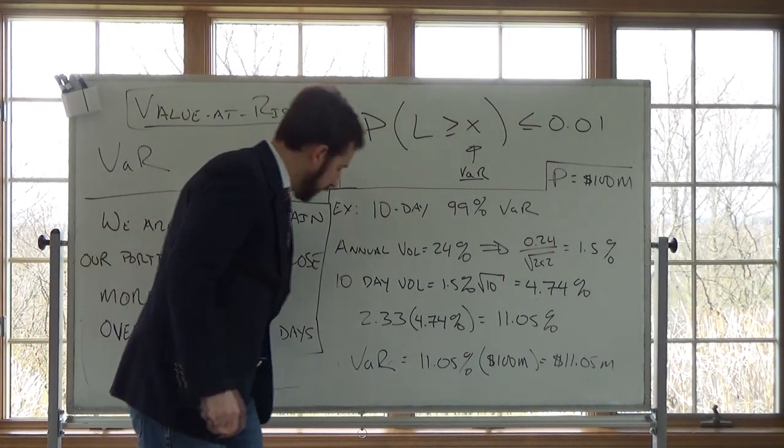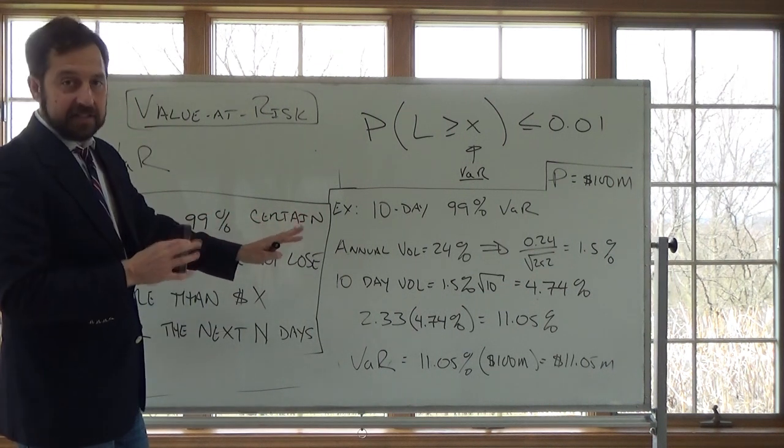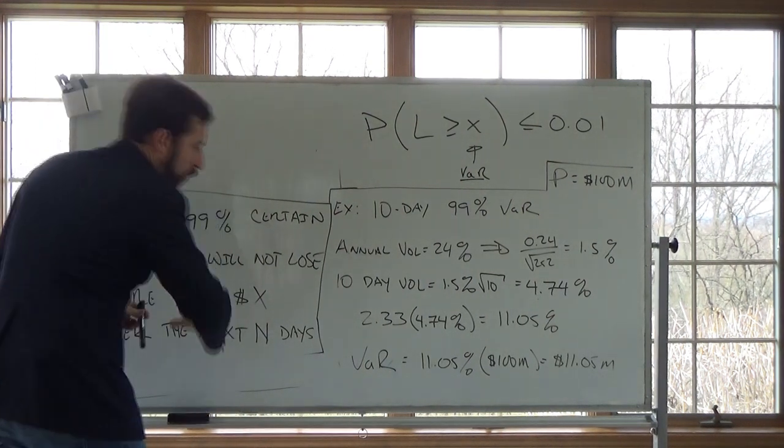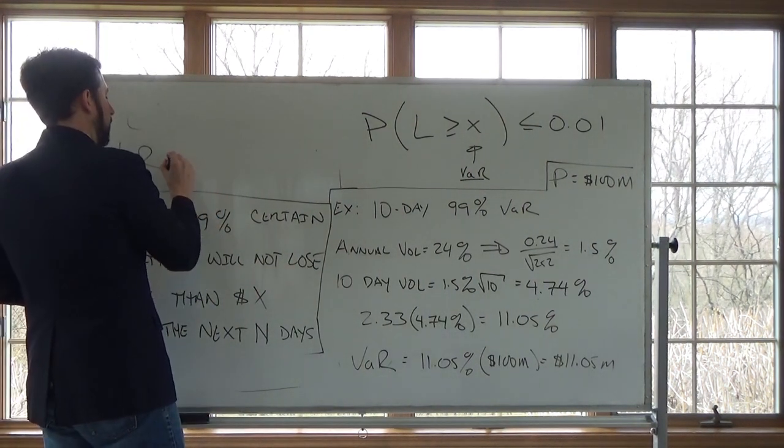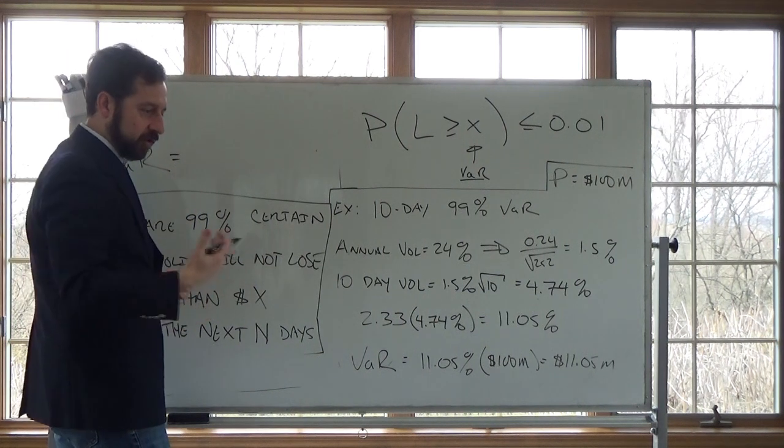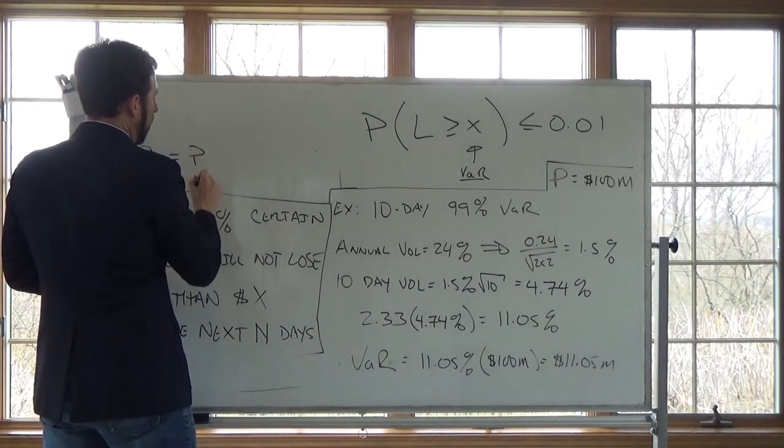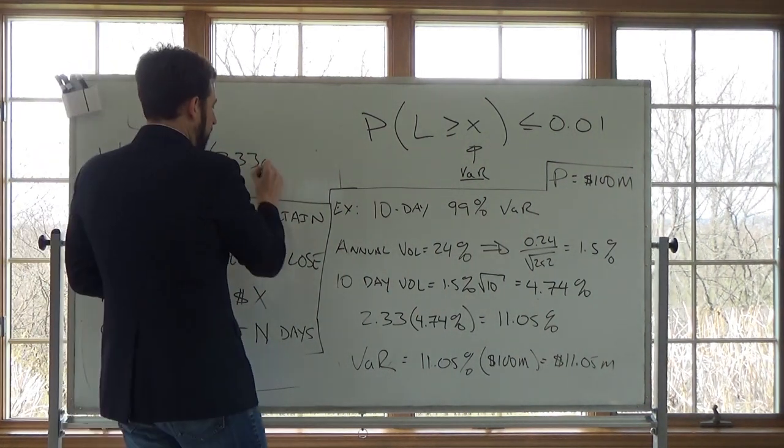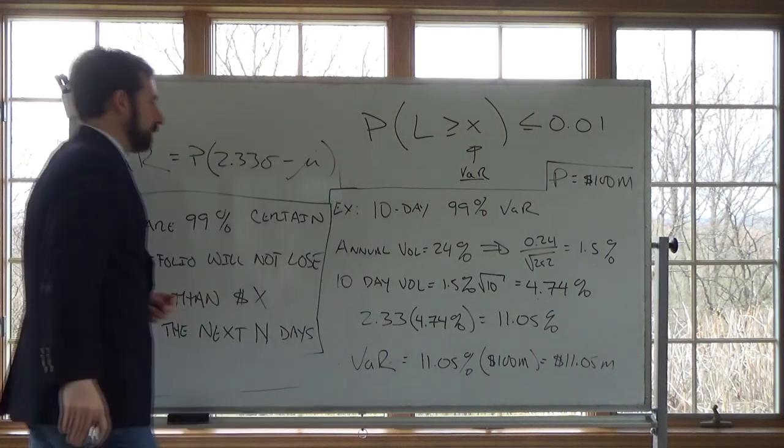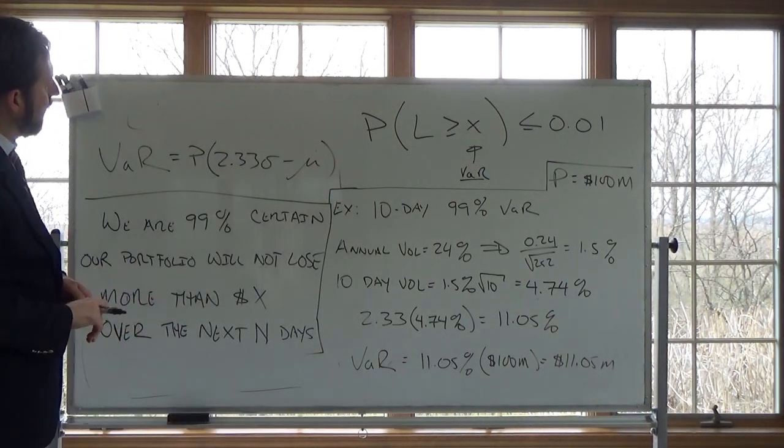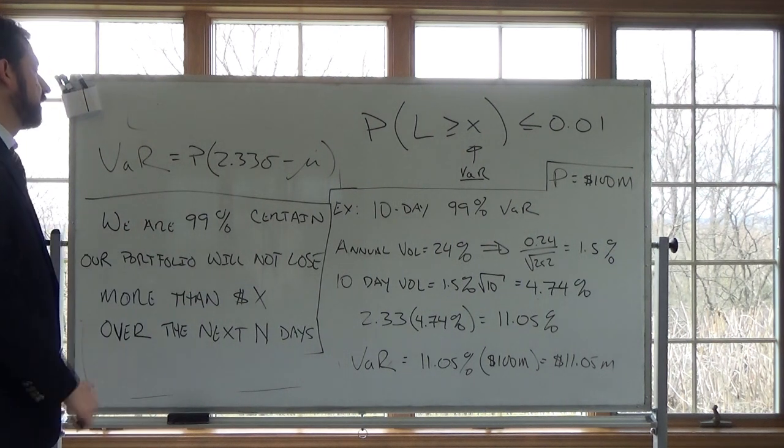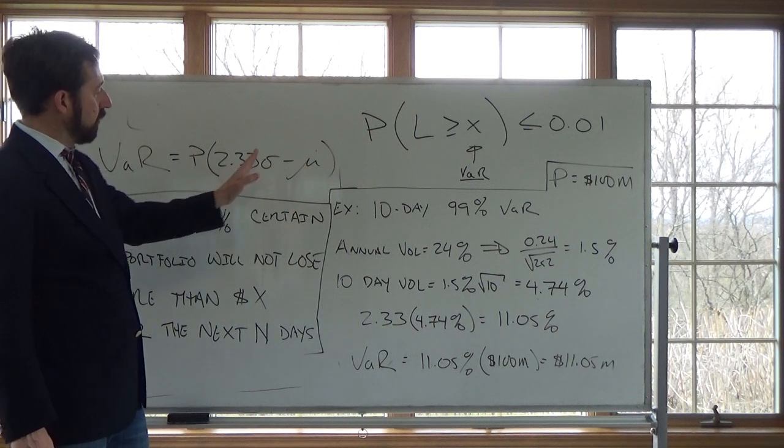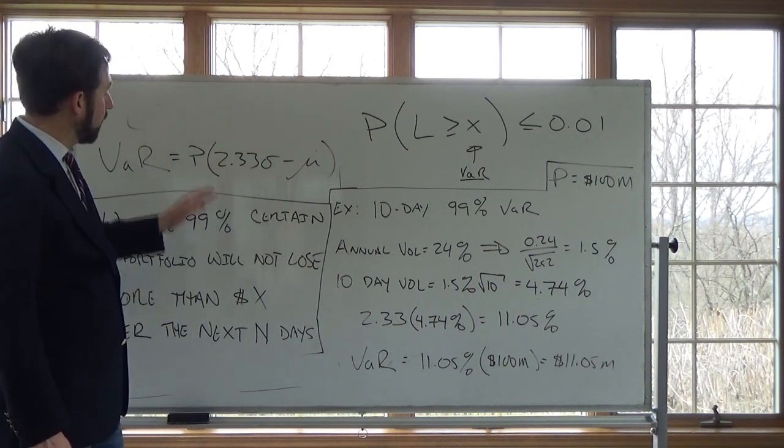Let me write up here to give you a one-line way to calculate this. Assuming independent increments and a normal distribution, the VAR would be our portfolio value times 2.33, assumes the normal distribution, times the standard deviation minus the mean. So if on an exam you're assuming independent increments and a normal distribution, if you're given a mean, then you would subtract it here. Otherwise, just 2.33 times the standard deviation times the portfolio value.